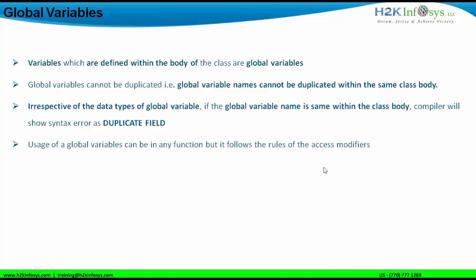Global variables can have access modifiers. Access modifiers can be public, public static, default, default static, protected, protected static, private, private static, and also final and final static. These are the access modifiers for global variables.